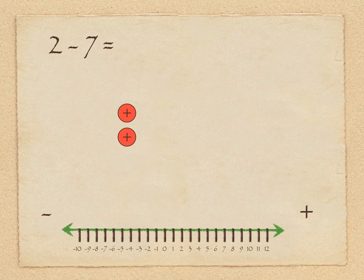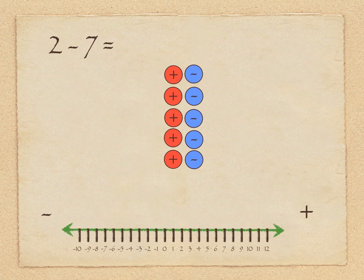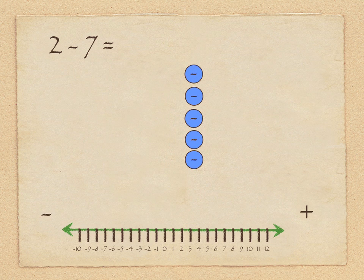This time we start at 2 and subtract 7. We start with 2 red tokens but need to take away 7. We can take away the 2 reds we do have, but we still have to take away 5 more. So we introduce 5 zeros — bring them in, and now that we have these zeros to work with, we can get rid of the 5 additional red tokens we need to get rid of. We blast those away and we're left with negative 5. On the number line, the caveman is positioned at 2, looking in the direction of the subtraction sign, and walks 7 steps to negative 5.